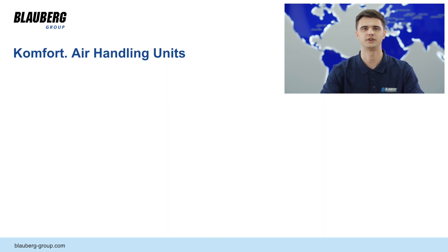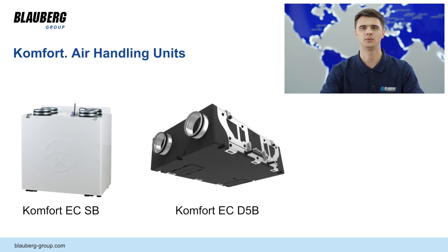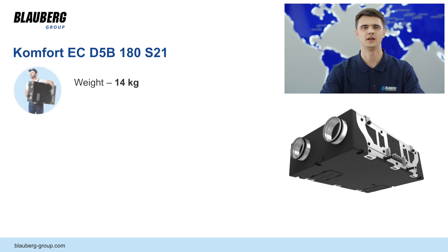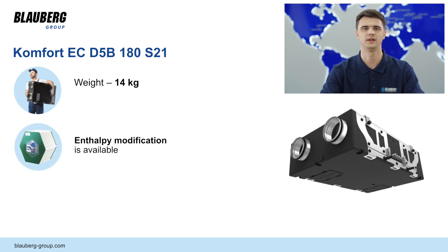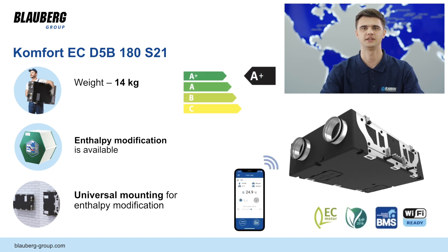Let us look at air handling units for residential premises designed and produced by Blauberg Group. The Comfort EC-SB: vertical oriented wall or floor mounting units with insulated metal casing, EC motors and counterflow heat exchanger. The Comfort EC-D5B: a lightweight unit with the possibility of universal mounting. The Comfort Roto EC-SE: vertical oriented wall or floor mounting unit with insulated metal casing, EC motors and rotary heat exchanger. Let us get closer to each unit. The Comfort EC-D5B is a lightweight suspended unit at only 14 kg, with easy mounting and maintenance, enthalpy modification as an option, and can be installed on the wall in vertical or horizontal position. Counterflow heat exchanger, EC motors and effective EPP casing design provide effective and quiet ventilation. Units can be controlled by smartphone application and easily connect to BMS.